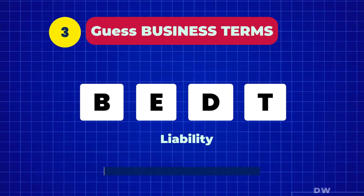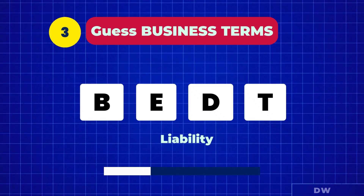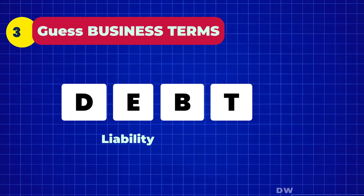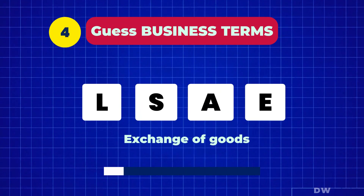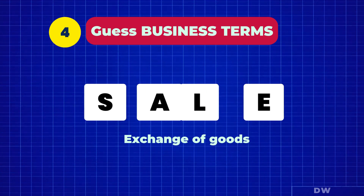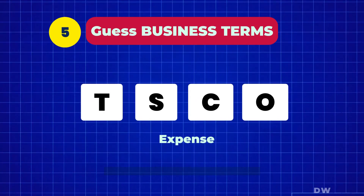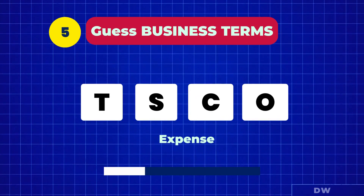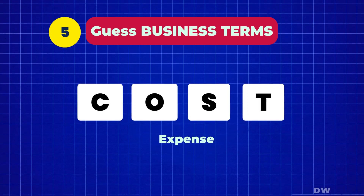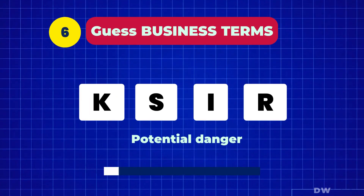Fund. This one is liability — debt. Exchange of goods — yes, sale. Expense — cost.